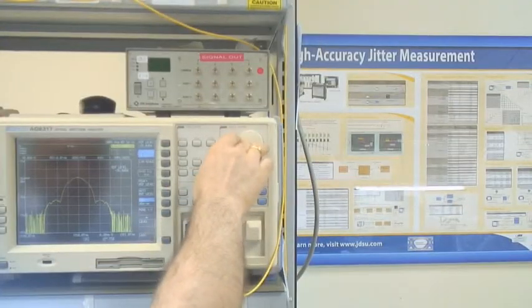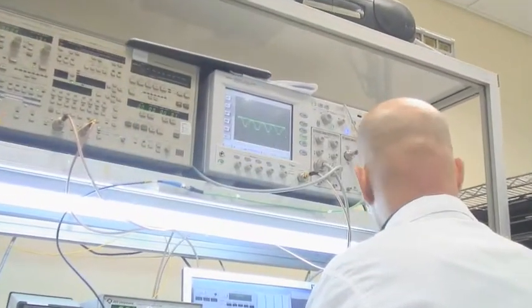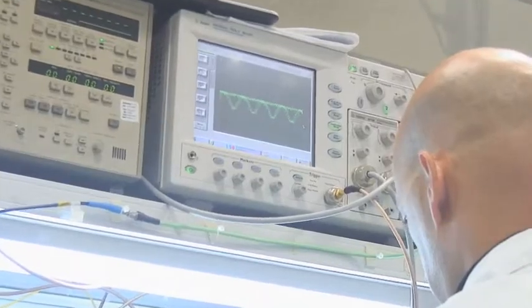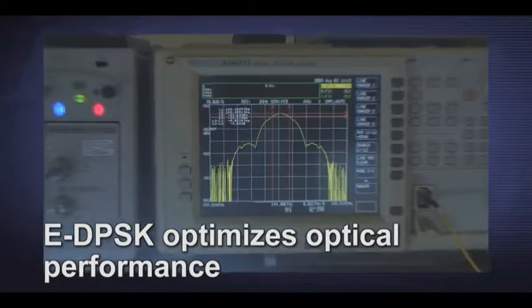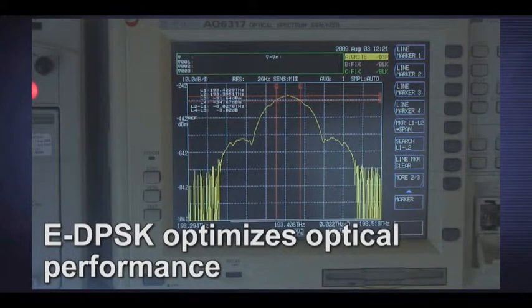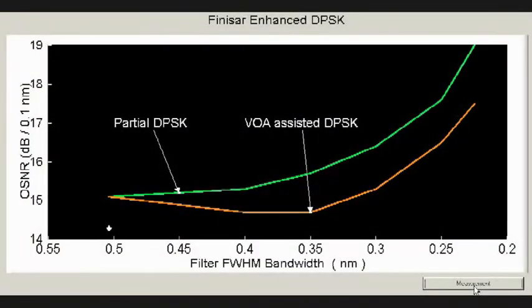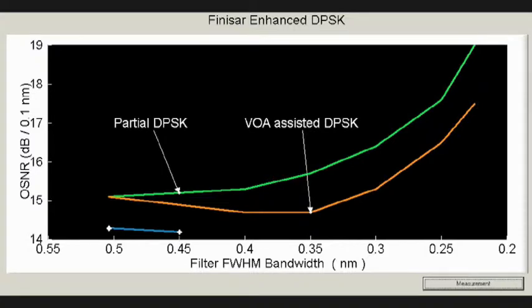First, we demonstrate the performance of Finisar's Enhanced 40G DPSK or E-DPSK transponders operating at 40 Gbps with 50 GHz channel spacing transmitted through Finisar's liquid crystal on silicon-based WSS. E-DPSK optimizes the optical performance of the transceiver by narrowing the transmitted power spectrum and maximizing the power in the center of the signal spectrum. The receiver design is similarly optimized to match the transmitted signal. This improves OSNR tolerance over all effective filter bandwidth range compared to other advanced DPSK technologies.